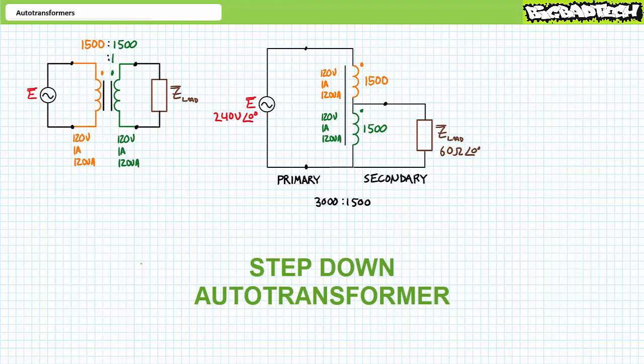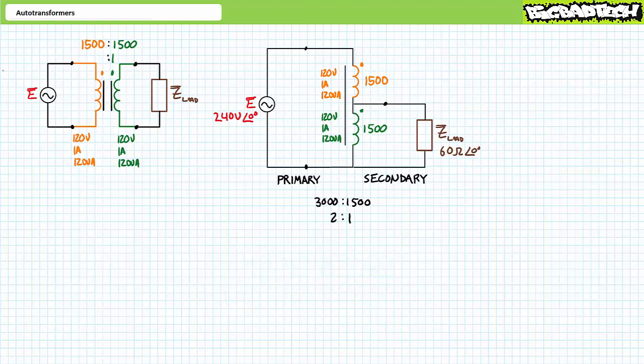Configured as a step-down auto transformer, one would connect the previously isolated two windings in a series-aiding fashion. This allows a total of 120 plus 120, or 240 volts, to be applied across a single winding. Output is then taken across half the larger winding. The primary input winding has 1,500 plus 1,500, or 3,000 turns, and the secondary output winding has 1,500 turns, even though they're part of the same winding. We've in effect created a two-to-one step-down auto transformer, where a 240-volt input results in a 120-volt output.